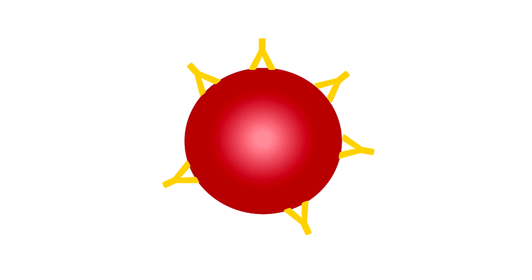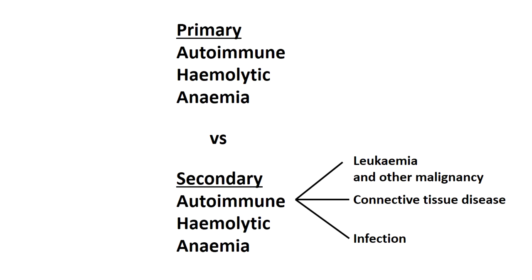There's two types of autoimmune hemolytic anemia. There's a primary which is idiopathic or in other words we don't really know what causes it, and the secondary disease, so you can get autoimmune hemolytic anemia in the context of a hematological malignancy or in some other diseases like connective tissue diseases such as lupus or SLE.